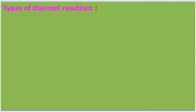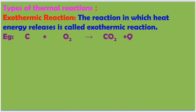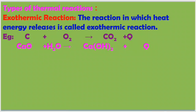Now we will see types of thermal reactions. There are two types. The first is exothermic reaction — the reaction in which heat energy is released. 'Exo' means outside. For example, carbon reacts with oxygen to form carbon dioxide and releases heat energy, where Q represents heat energy. Another example: calcium oxide reacts with water to form calcium hydroxide, and heat energy is released in this reaction too.